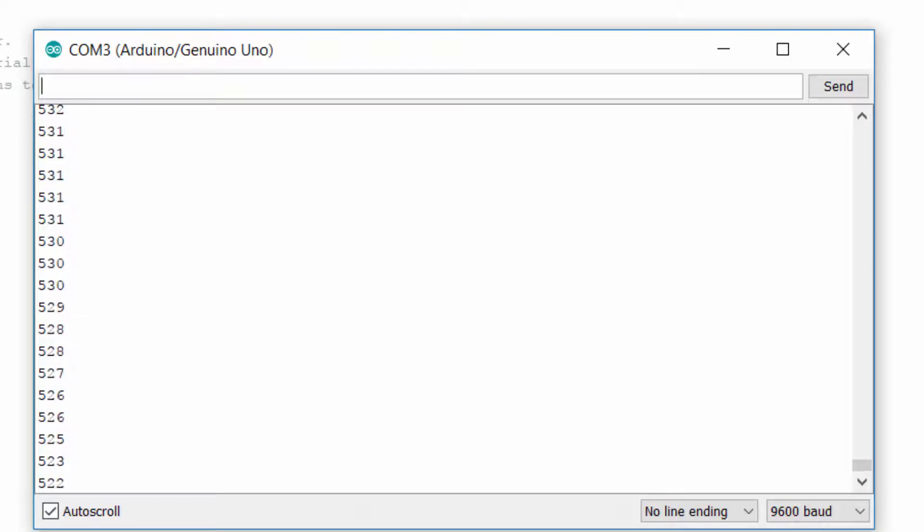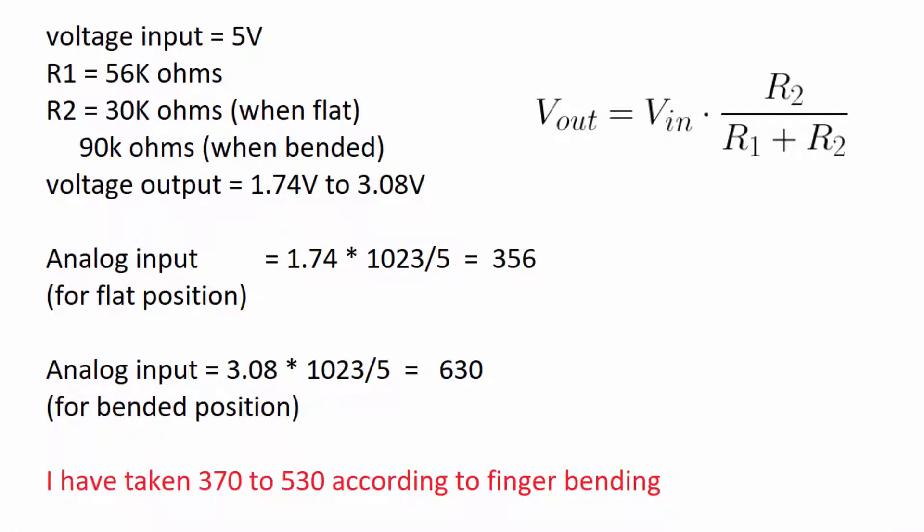This value may be different for you if you are using other than 56K ohms resistor. You can calculate this range by voltage divider formula. You can see its values are almost the same as what we got from serial monitor.